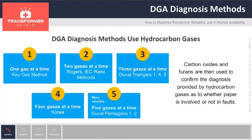There are several DGA diagnosis methods available using either one, two, three, four, or five hydrocarbon gases at a time, for instance in the triangle and pentagon methods. Carbon oxides and furans are then used to confirm the diagnosis provided by hydrocarbon gases, as to whether paper is involved in faults or not.